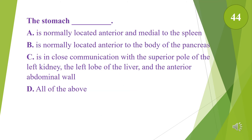The stomach: A. Is normally located anterior and medial to the spleen. B. Is normally located anterior to the body of the pancreas. C. Is in close communication with the superior pole of the left kidney, the left lobe of the liver, and the anterior abdominal wall. D. All of the above. The answer is D, all of the above.